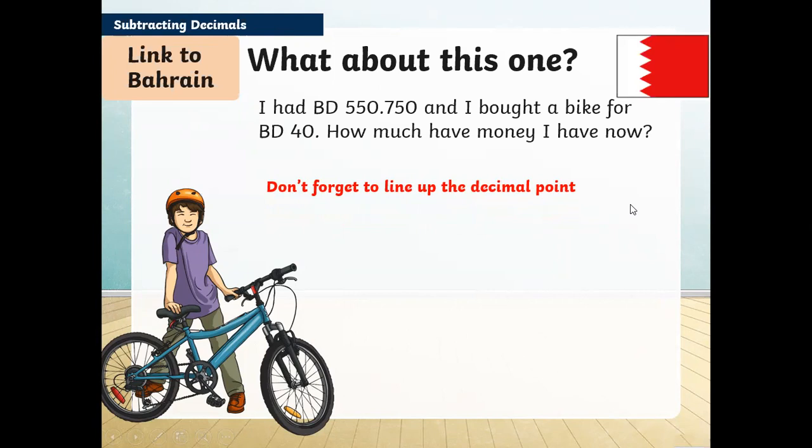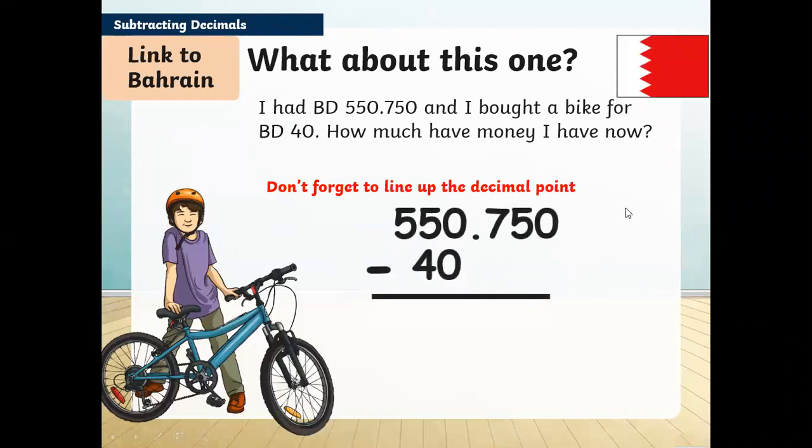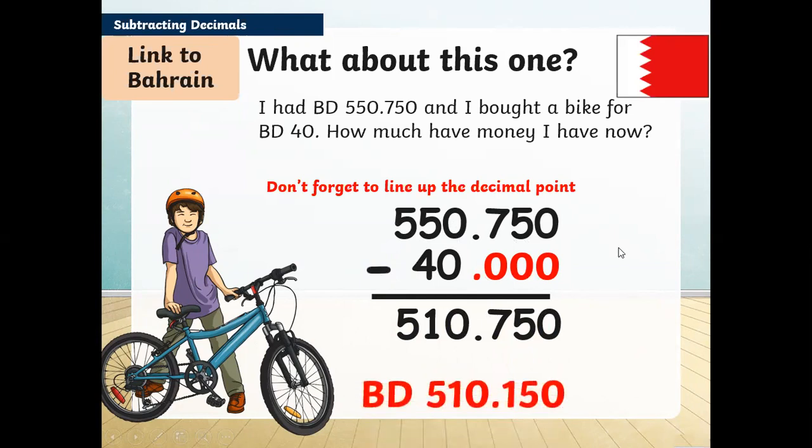How do you calculate the leftover money? First, write down the numbers on top of each other and line up the decimal point. 40 is without a decimal number, so we put placeholder zeros, then start subtraction from the right side. 750 will come as is because it's not subtracting any number. 0 minus 0 is 0, 5 minus 4 is 1, and 5 will come down as is. The leftover money I have is BD 510.150.